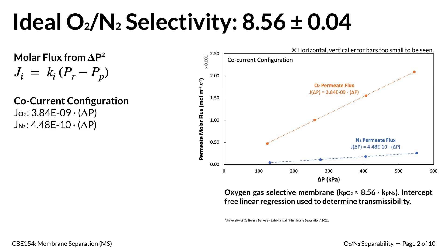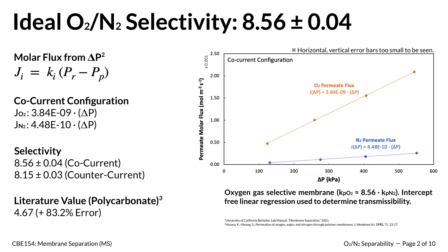Permeant flux was determined by dividing the permeant molar flow rate by the effective membrane area, considering the multi-tubular membrane module. Permeant flux was then plotted versus the pressure difference — defined as the difference between the retentate and permeant stream pressures — for both pure gases. Since molar flux and pressure difference are proportional, we used the intercept-free linear regression method to find the transmissibility values of each gas. By finding the ratio between both transmissibility values, we determined a selectivity of 8.56 and 8.15 for the two membrane configurations. Our team concluded that this deviation arose from procedural error, since selectivity is an intrinsic property of a membrane given two gases.